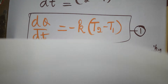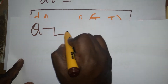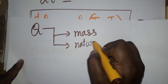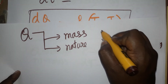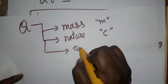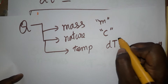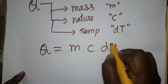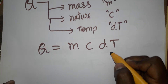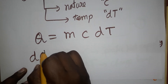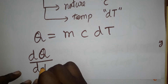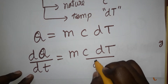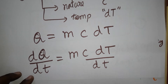Heat energy depends on three factors: first, mass — if mass increases, heat energy increases; second, the nature of the material, represented by specific heat capacity c; and third, how much temperature changes, represented by capital T. So heat Q equals m·c·dT. Differentiating with respect to time, dQ/dt equals m·c·(dT/dt), where capital T is temperature and small t is time.